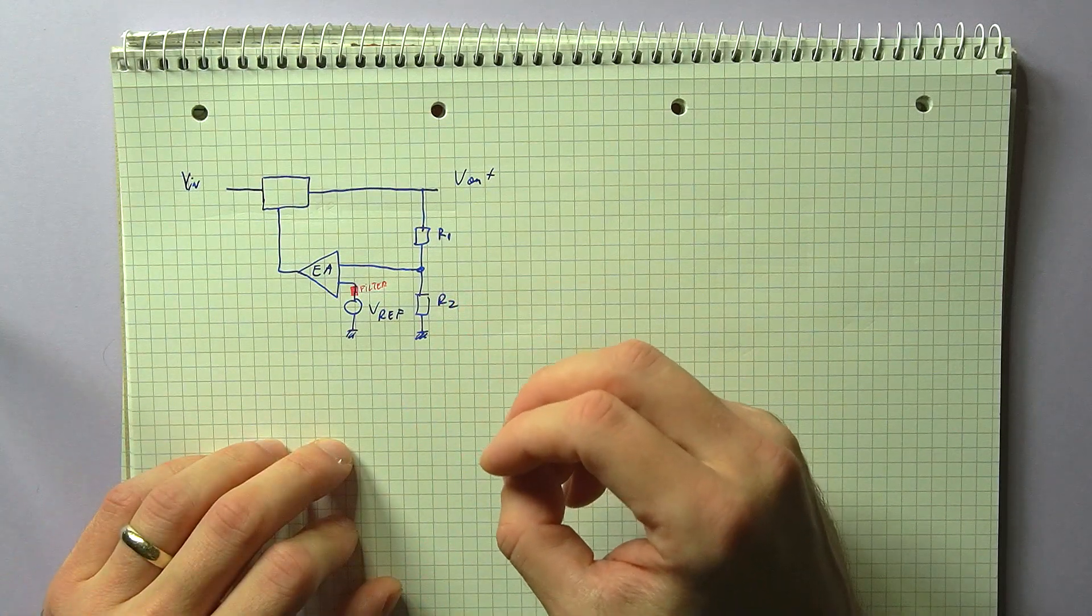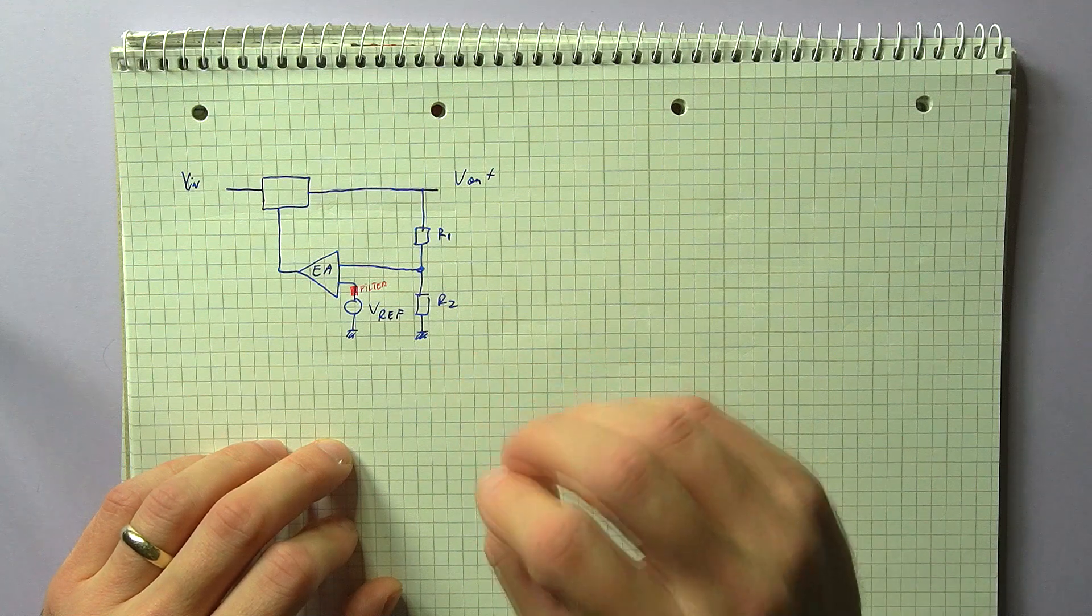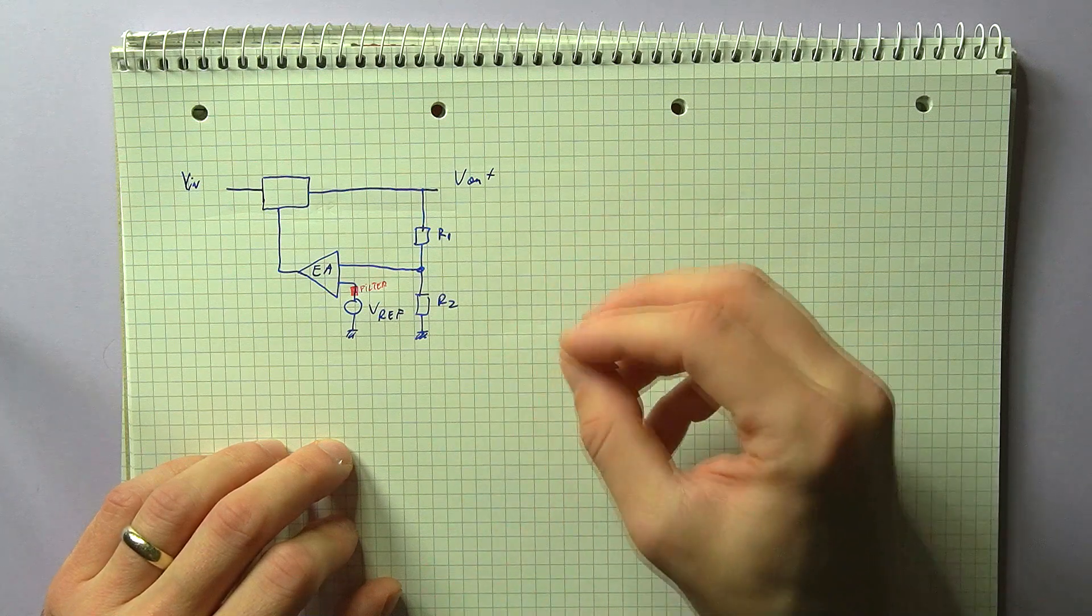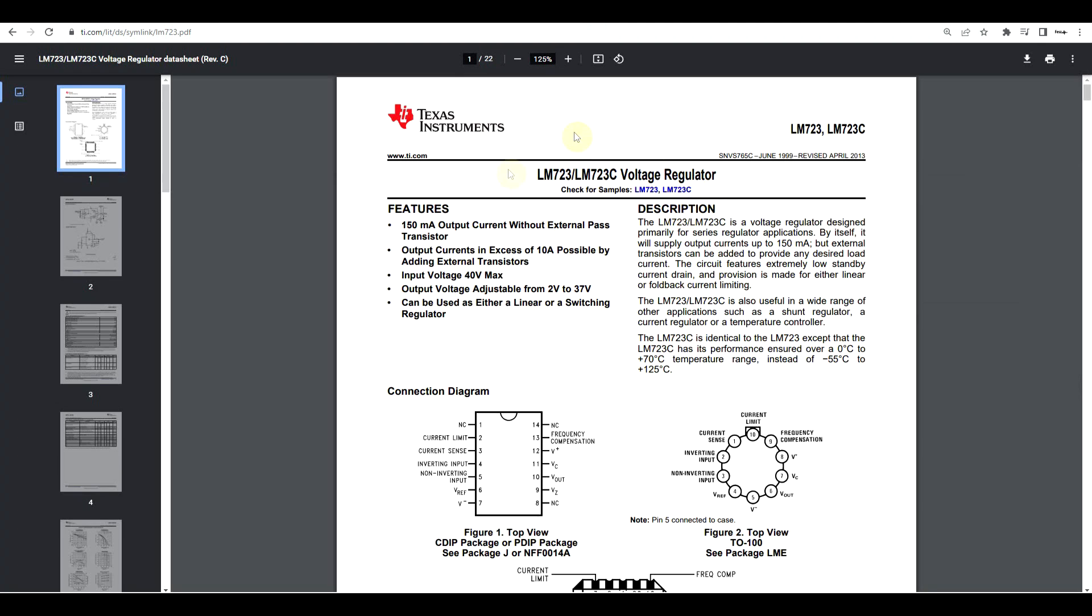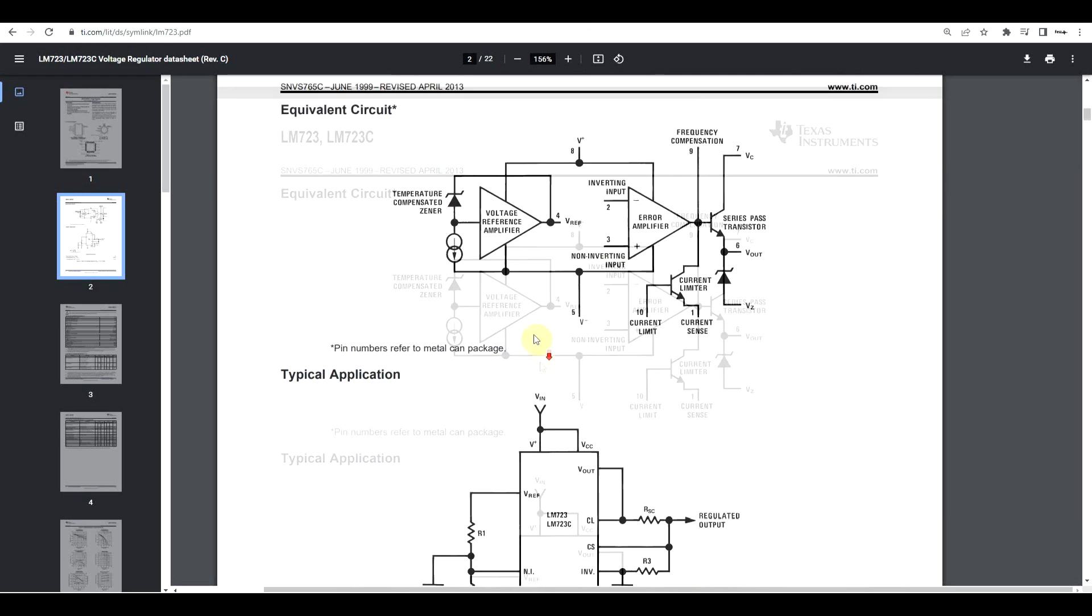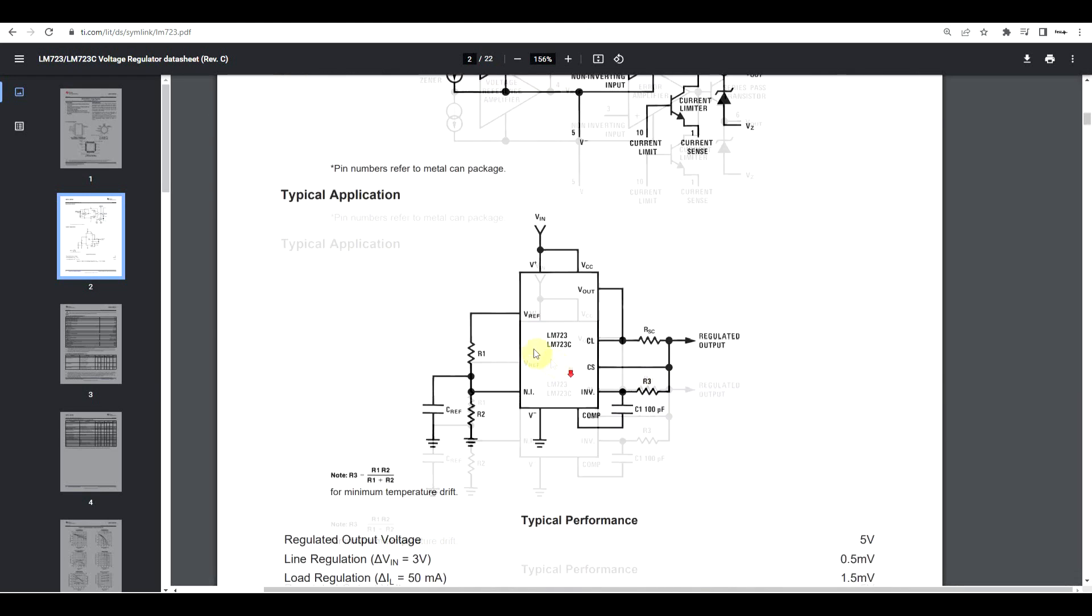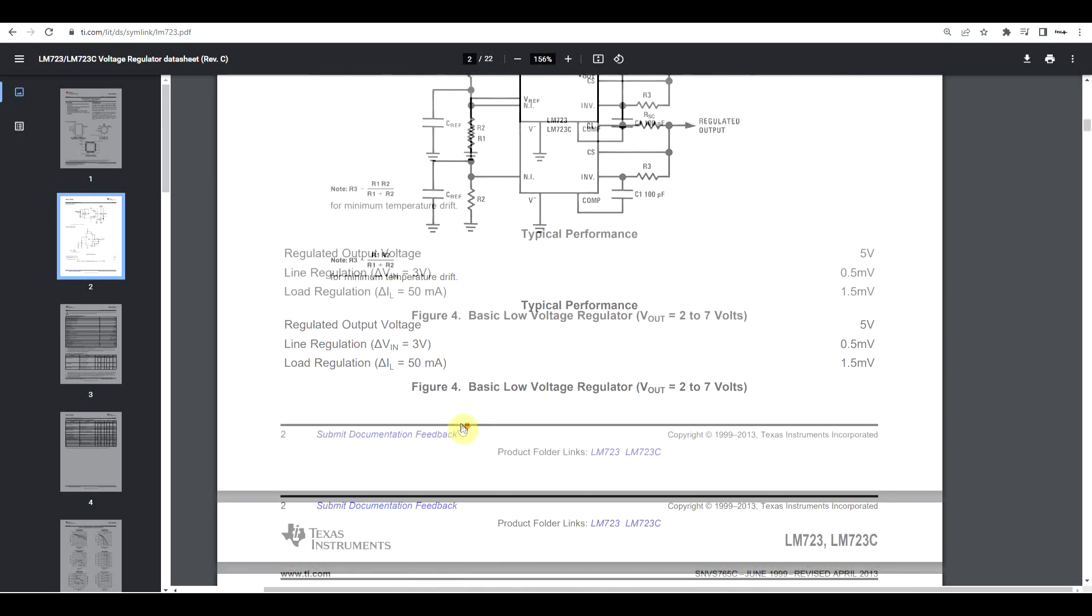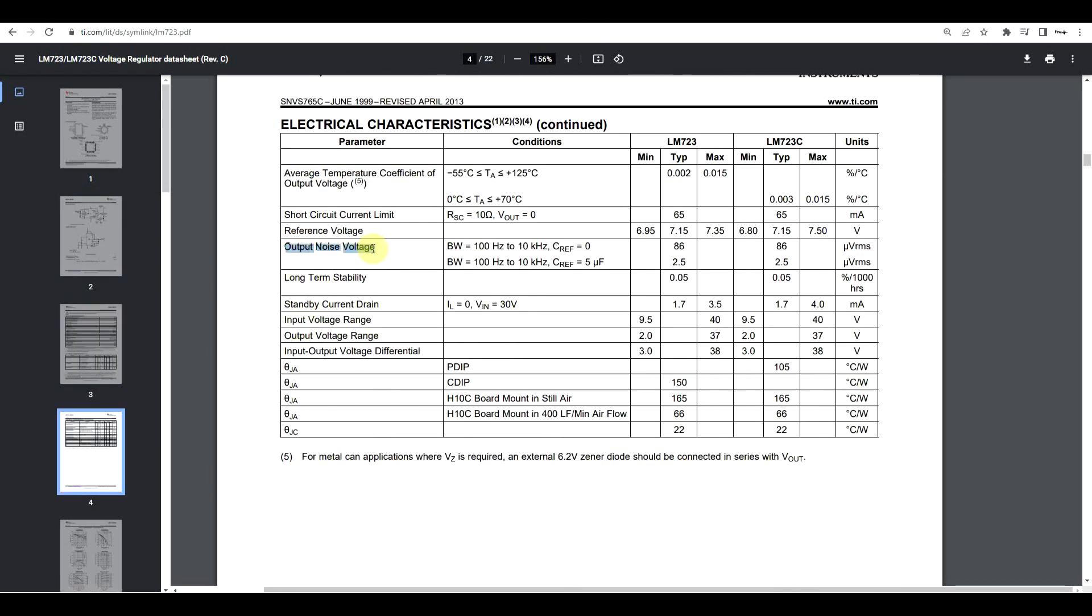Anyway, for certain regulators, it is possible to improve this noise source by filtering just the reference by itself, as is the case for the LM723. So if we have a look in the datasheet of this particular part, we can see that it has a Zener-based reference, which is not directly connected to the error amplifier. So the connection is done through external pins. And if we go a bit lower, we can see our typical application, in which the reference is connected to one of the amplifier's inputs through some resistors and a filtration capacitor.